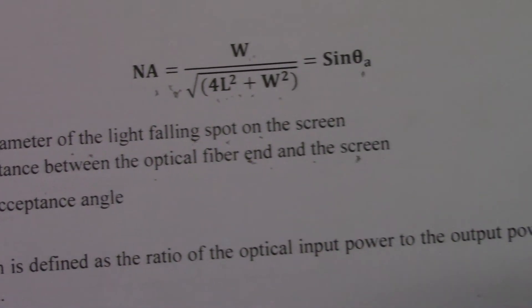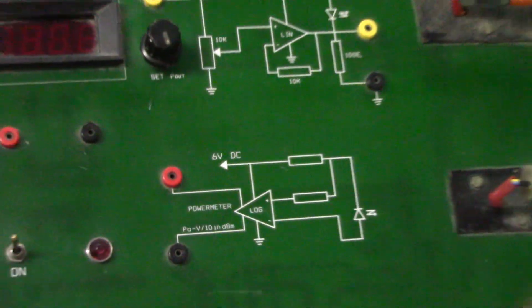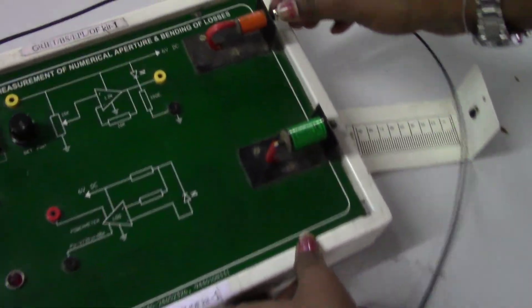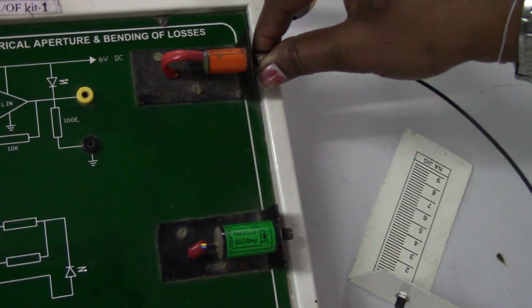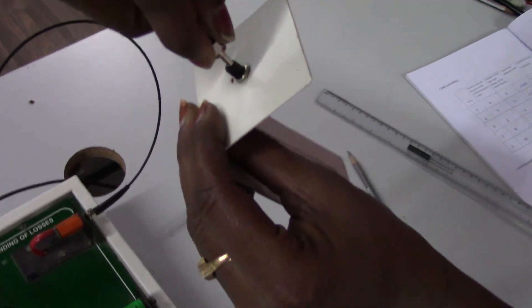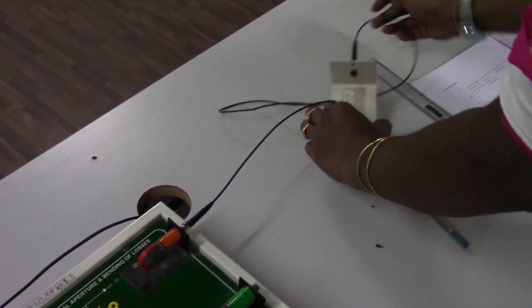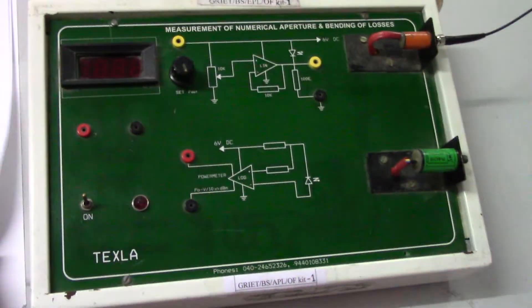Now let us start the experiment. Firstly I am going to connect my one meter length of optical fiber — one end to the given light source, like this. I have connected one end of the optical fiber, and this second end of the optical fiber I will connect to the numerical aperture jig, like this. After connecting, you just keep it like this.